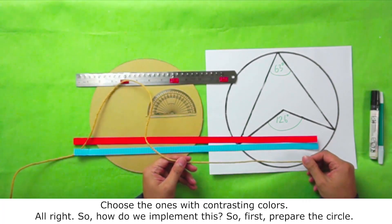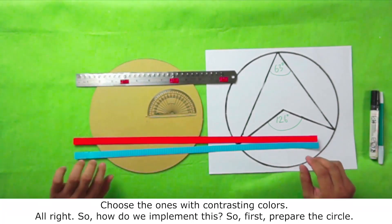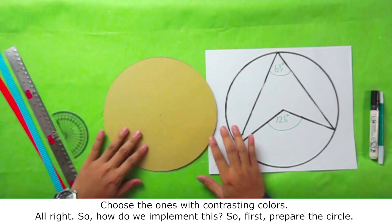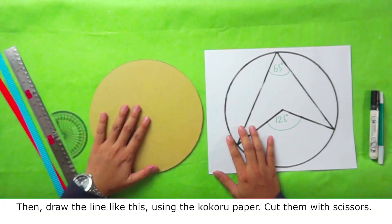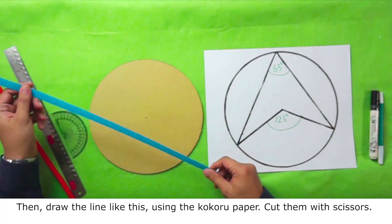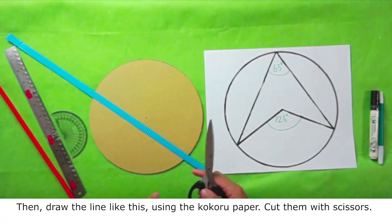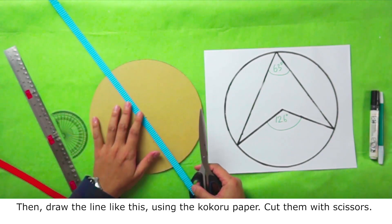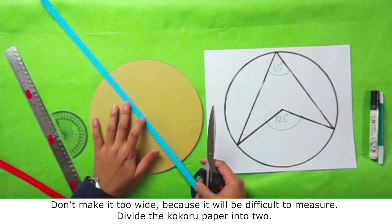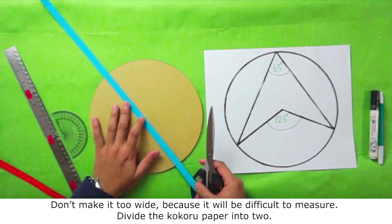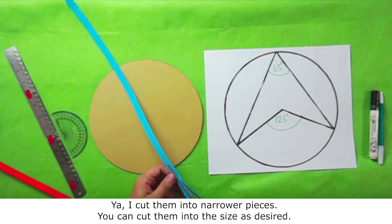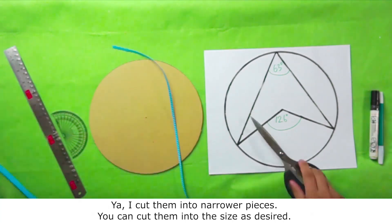Alright, so how do we implement this? So first prepare the circle. Then draw the line like this, using the kokoru paper. Cut them with scissors. Don't make it too wide, because it will be difficult to measure. Divide the kokoru paper into two. I cut them into narrower pieces. You can cut them into the size as desired.